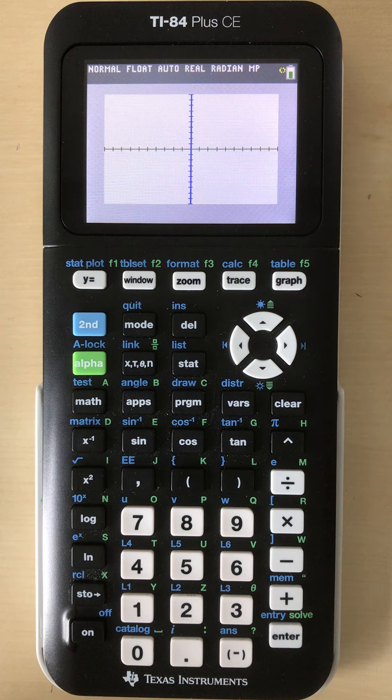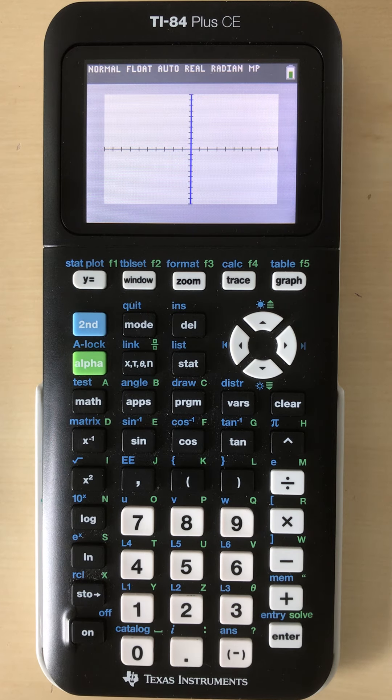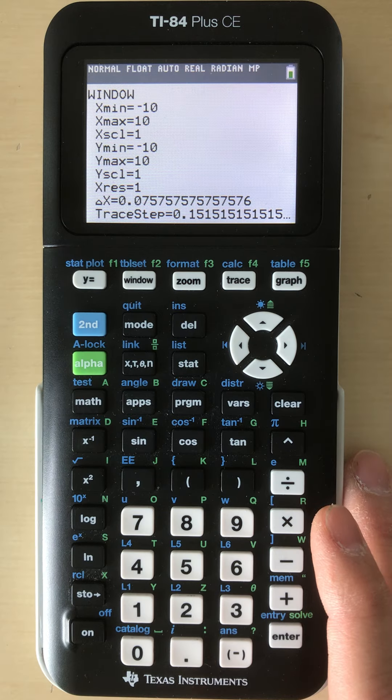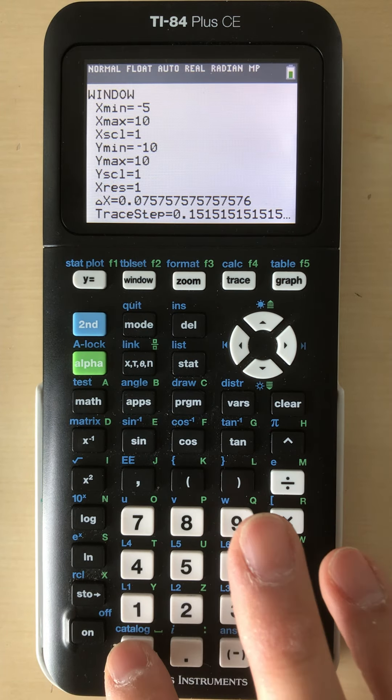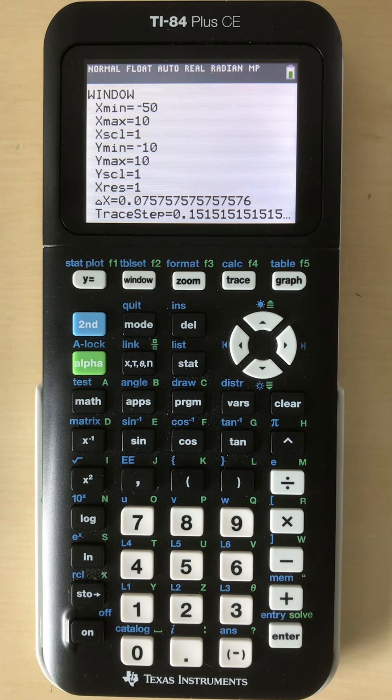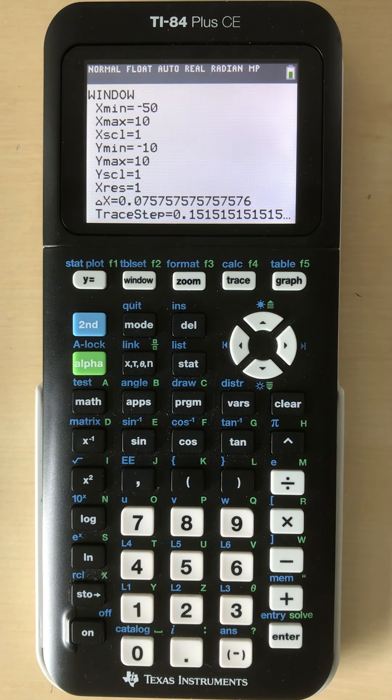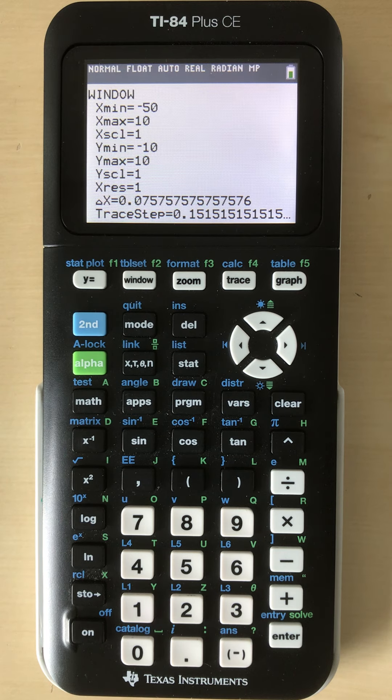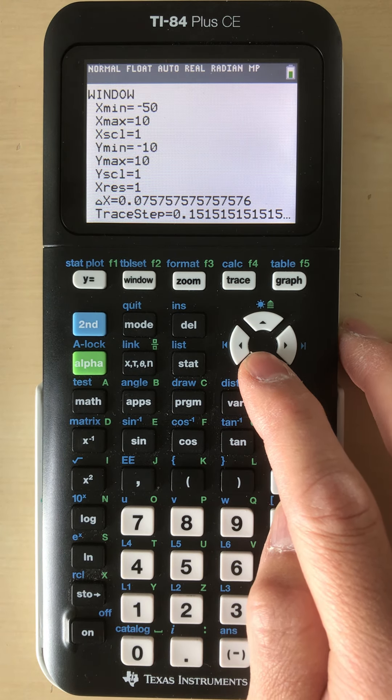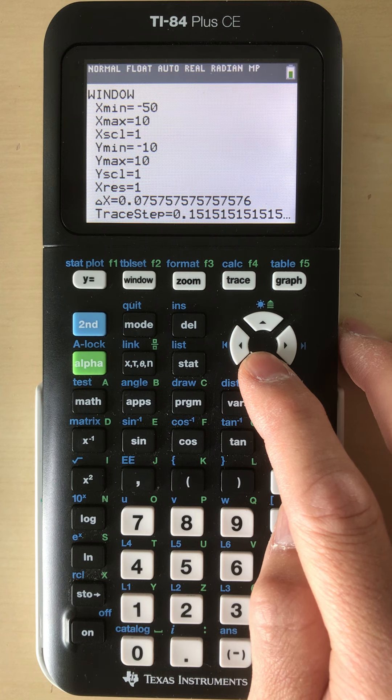And again, not super useful, so we need to adjust those window settings. Use some logic. Negative x values—we're not going to have a whole lot, so we're not going to be concerned about negative x values. But I'm going to set it at negative 50 because this is going to be a pretty small scale graph. So we're going to set it at negative 50.